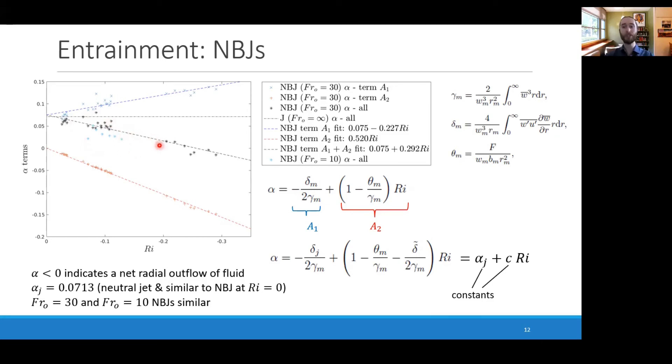This contrasts to neutral jets, which have a Richardson number of zero and a constant entrainment coefficient, and I've shown this here as this horizontal black line at around 0.07, which was calculated using the same experimental setup. We see that if you took a linear fit of the entrainment coefficient for a negatively buoyant jet, the y-intercept is very close to the neutral jet value, and this makes sense because as the Richardson number approaches zero, the flow becomes more and more momentum dominated, and you should expect it to be similar to a neutral jet.